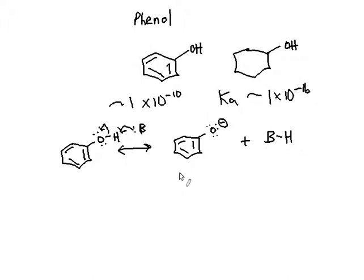Now, when we look at the phenoxide compared to the conjugate base that would form from cyclohexanol, the obvious difference is that we have this ring right next to the negatively charged oxygen. And so the question is, can this conjugate base be stabilized? Can that negative charge be stabilized and shared throughout the molecule?